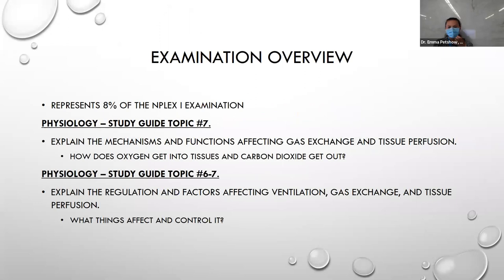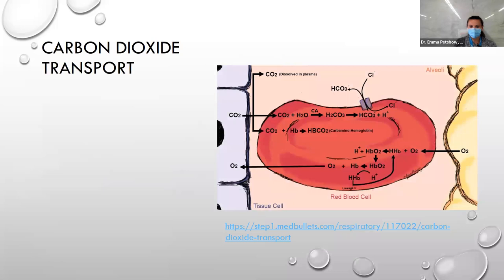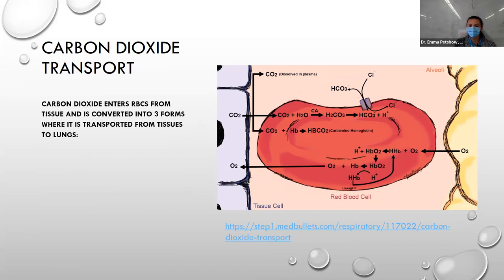Getting into tissue perfusion and gas exchange at the alveolar-blood-cellular level. CO2 transport: CO2 enters red blood cells from tissue and gets converted into three forms. The smallest amount dissolves directly into plasma. The largest amount is converted to bicarbonate (HCO3−). A smaller amount becomes carbaminohemoglobin — CO2 bound to the protein portion of hemoglobin. These three forms transport CO2 to the lungs.